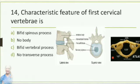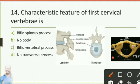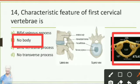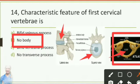Characteristic feature of the first cervical vertebra: option A bifid spinous process, option B no body, option C bifid process, option D no transverse process. The answer is that the first cervical vertebra has no body. The atlas is the first cervical vertebra and the axis is the second cervical vertebra.